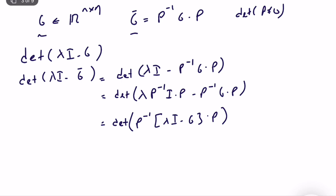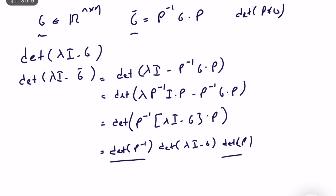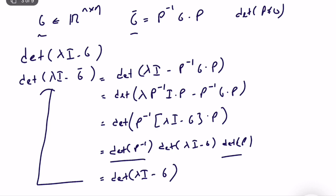Since det(P⁻¹)·det(P) = 1, we get det(λI − Ĝ) = det(λI − G). This shows that under a similarity transformation, the characteristic equation of the system matrix is invariant — it doesn't change. This is important because the characteristic equation gives the eigenvalues, and eigenvalues determine the stability properties of a dynamical system. They are the core features defining the stability of a dynamical system.